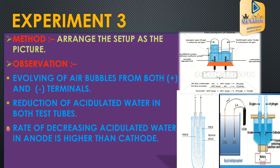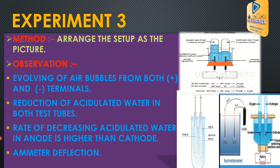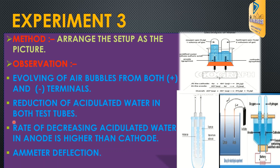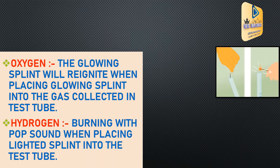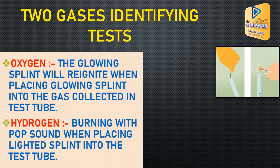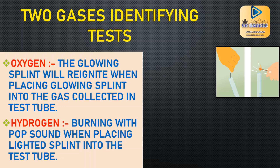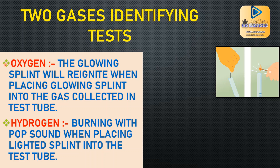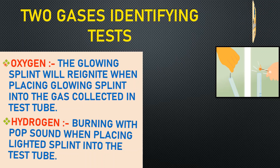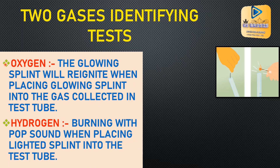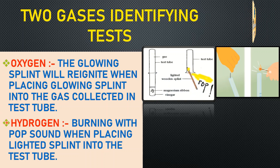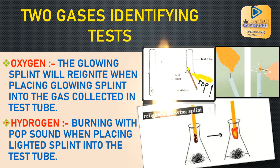The rate of decrease of acidulated water at the anode is higher than at the cathode, and you can observe ammeter deflection. The two gases collected in the test tubes are identified as follows: oxygen gas is identified by a glowing splint reigniting when placed into the gas; hydrogen gas is identified by a pop sound when a lit splint is placed into the test tube.